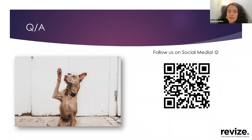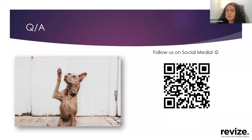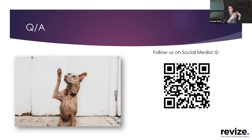Caitlin von Schmidt asks: the numbers of forms on the list — is that the total filled out or total completed? That'll be all the forms that have been submitted in that forms classification — so of that form type, it's the number of forms that match that category.